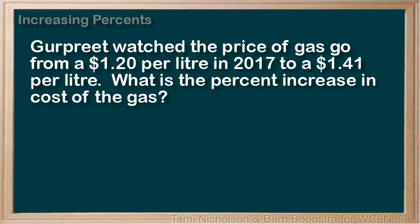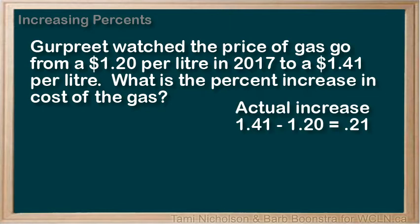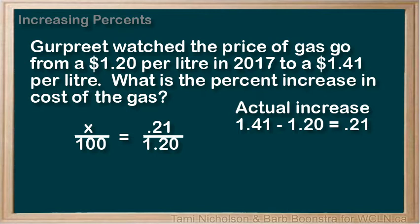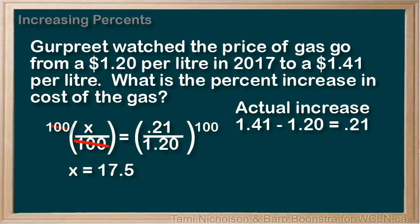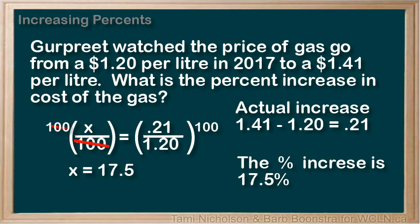Here is another example. Gurpreet watched the price of gas go from $1.20 per litre in 2017 to $1.41 per litre. What is the percent increase in cost of the gas? We're looking for the increased amount — how much did the price of gas increase? $1.41 minus $1.20 is $0.21, so the price of gas increased by $0.21. Our percent equation becomes: 0.21 is what percent of 1.20? Write the equivalent fractions, substitute in the values, and solve the equation. To isolate the percent, multiply both sides by 100, and we get an answer of 17.5%. This is the percentage increase in the price of gas.